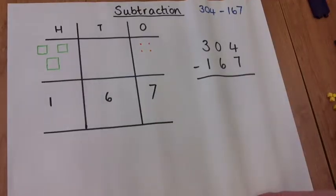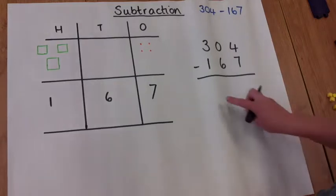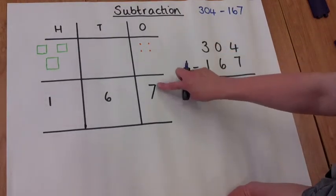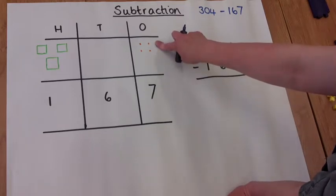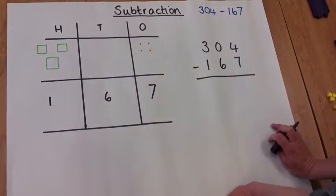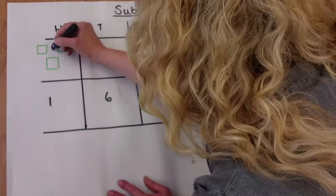So on to the pictorial and abstract method for subtraction. 304 take away 167. Starting in the ones column, we want to take away seven ones, but there's only four ones there. So we need to go across to the tens column. Nothing in there either. So we need to go to the hundreds column and regroup 100.